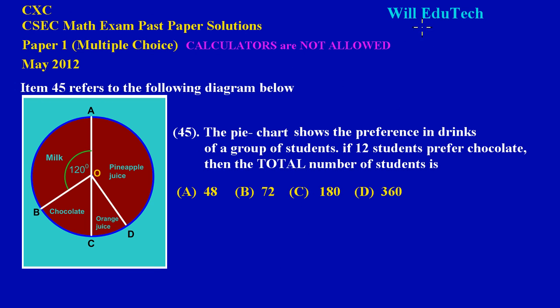It's a pleasure having you back again here on Will EduTech. In this video we'll be looking at the solutions to questions 45 and 46 on the May 2012 CSEC math exam pass paper. Item 45 refers to the following diagram. The pie chart shows the preference in drinks of a group of students. If 12 students prefer chocolate, then the total number of students is... So basically what they want us to find is the total number of students who took part in the survey.